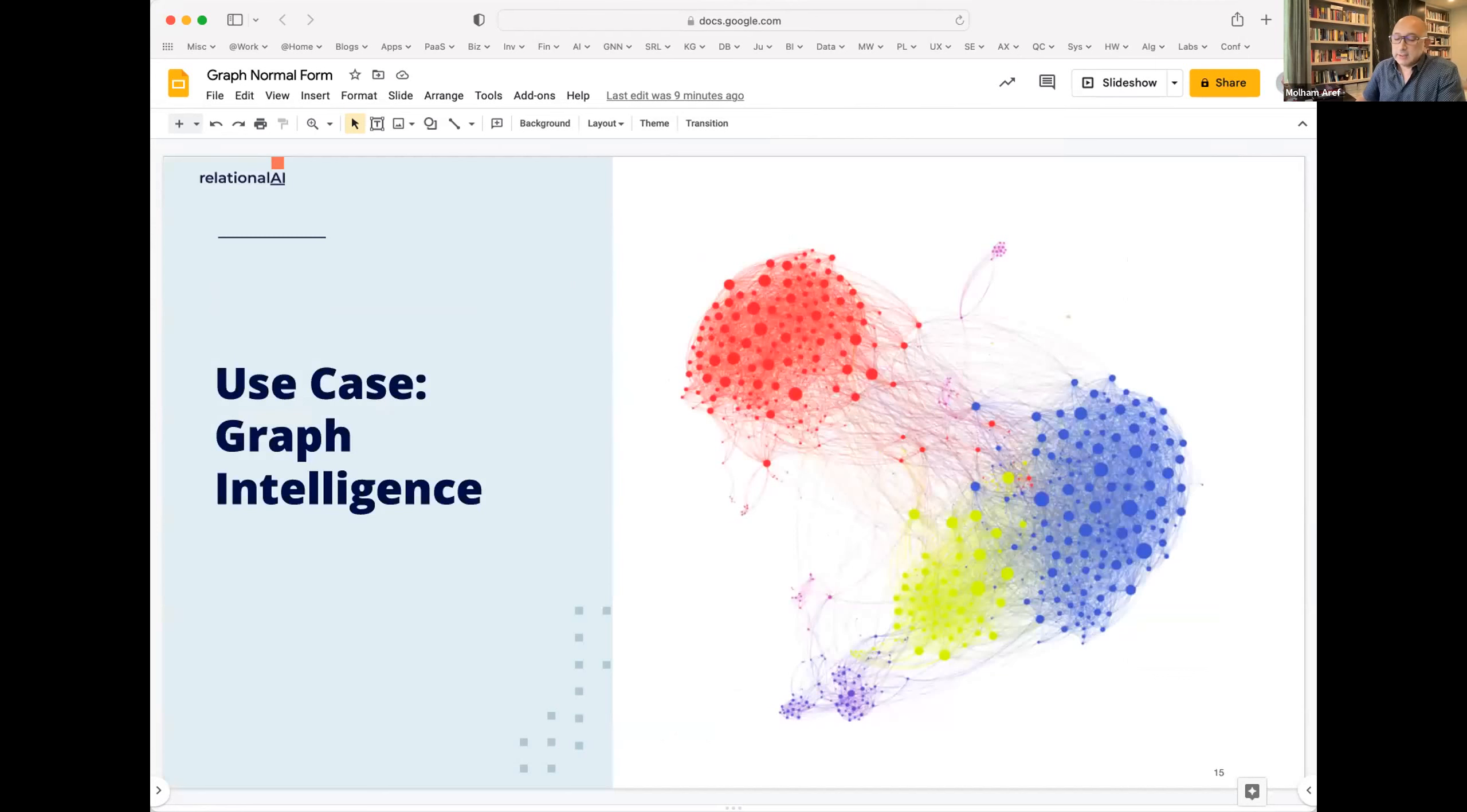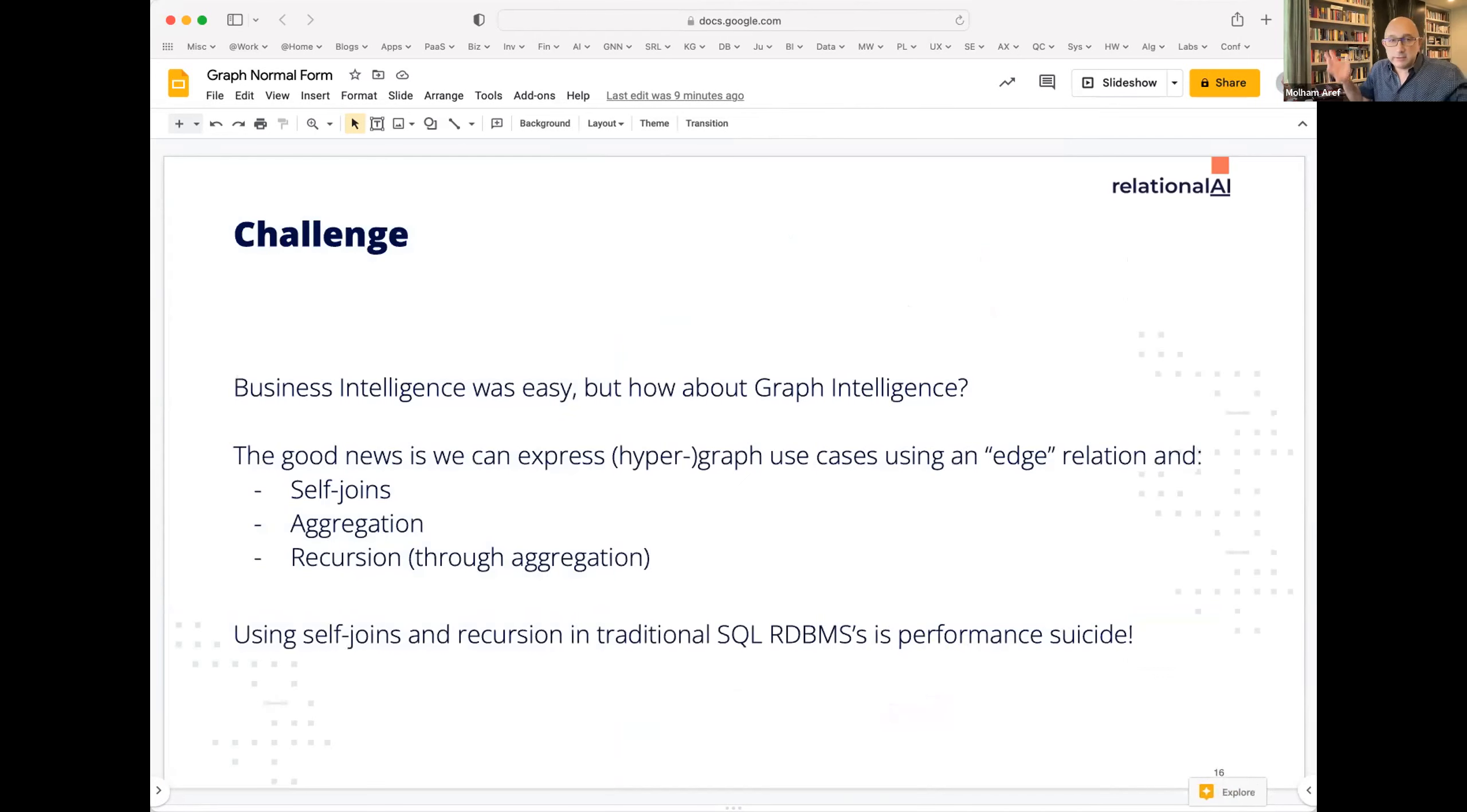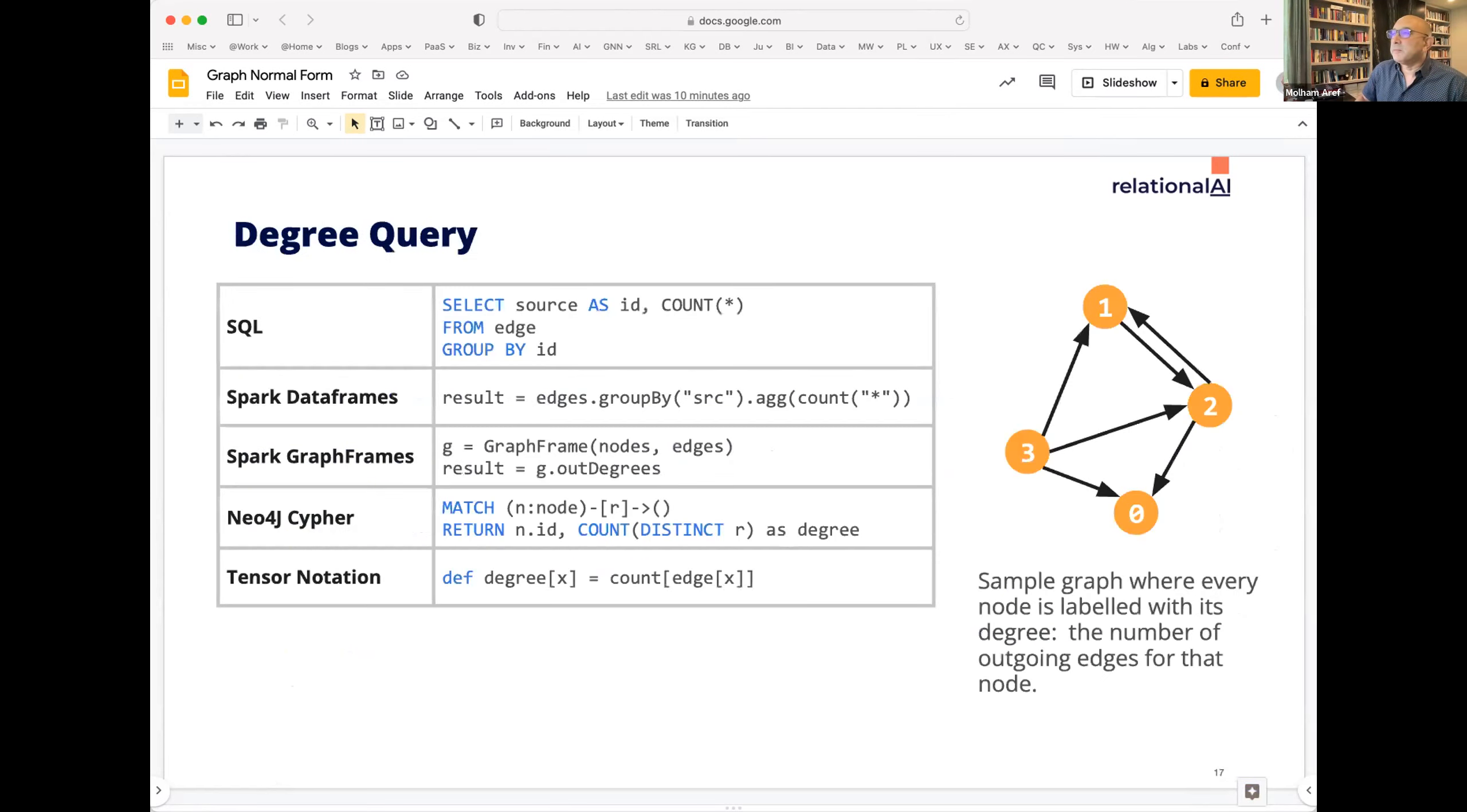Let's talk about graphs. Maybe you say business intelligence is easy. What about graphs? Well, we know, I've heard multiple times in the last day and a half. The good news is you can express the graph queries using an edge relation with self joins, with aggregation and with recursion, recursion to aggregation. Again, historically it would have been performance suicide to do all this stuff on a sort of a classic relational database implementation, but no more.